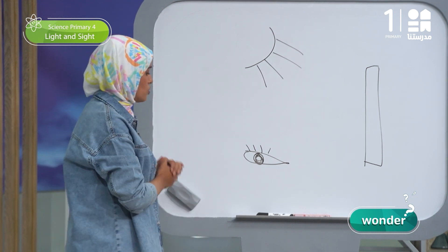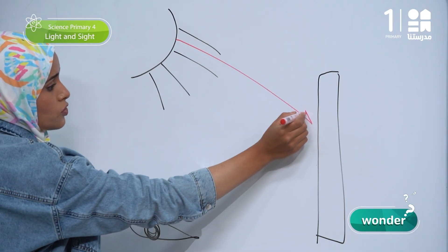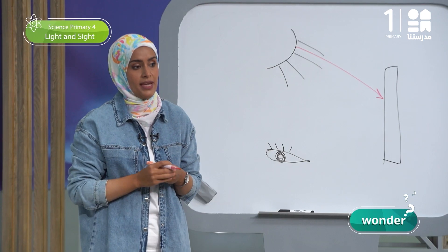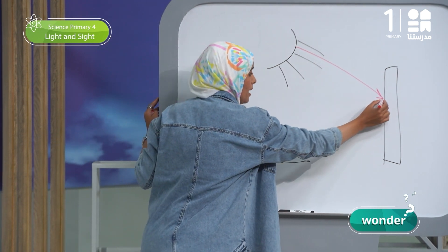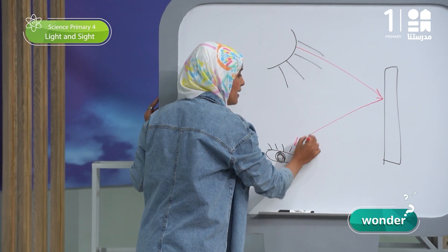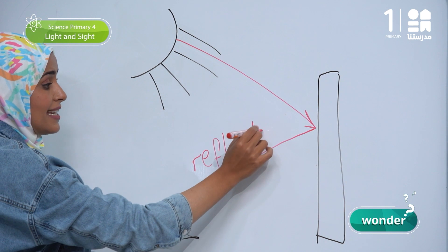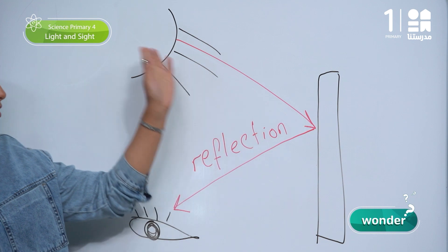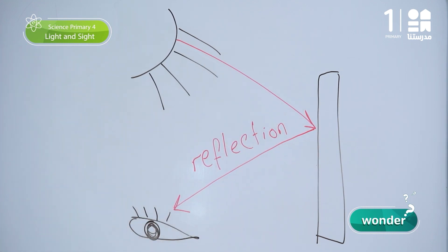When the light falls from the light source and hits any object, it is going to bounce back — that's reflection, انعكاس للضوء. The light falls from the light source, hits the object, then returns back to our eyes.